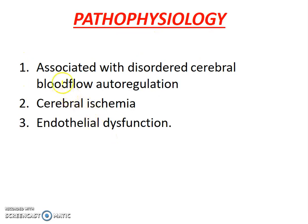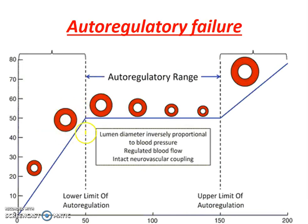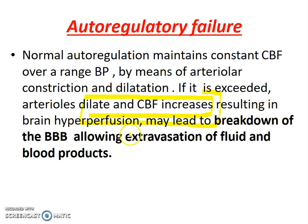Coming to the pathophysiology, the three important mechanisms are: first, it is associated with disordered cerebral blood flow autoregulation; second is cerebral ischemia; third is endothelial dysfunction. Regarding cerebral blood flow, there is an autoregulation which maintains the perfusion pressure over a range of blood pressure. If that range is crossed, as in a patient with hypertension, the blood vessels may dilate inappropriately, leading to brain hyperperfusion and breakdown of the blood-brain barrier, allowing extravasation of fluid and leading to edema formation.